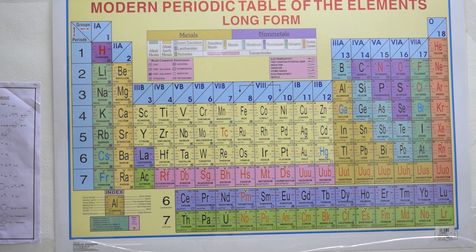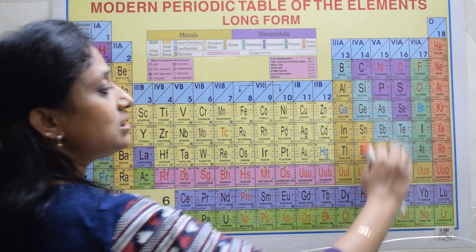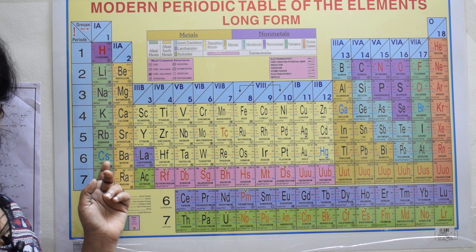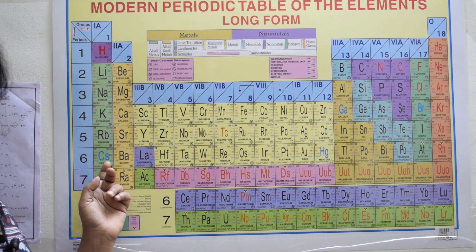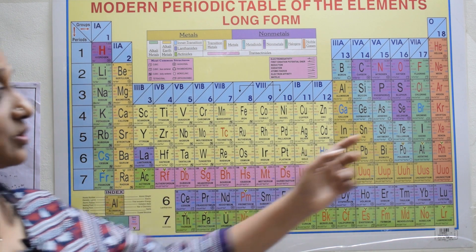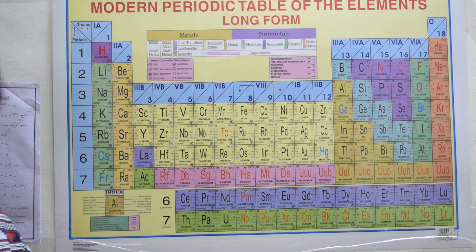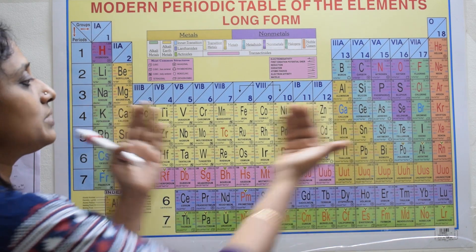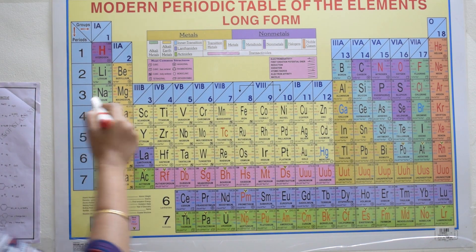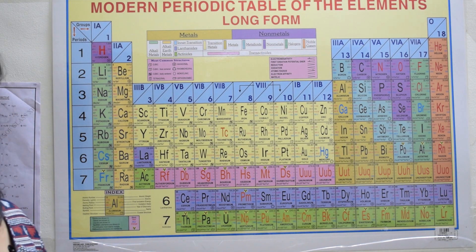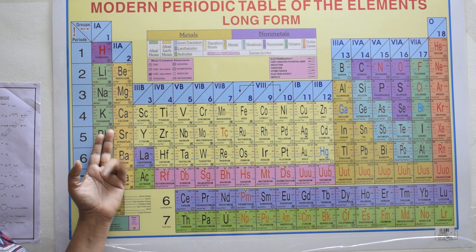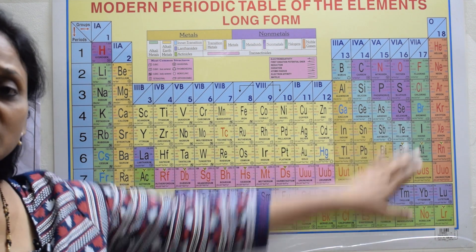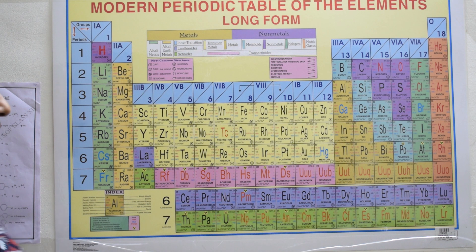On the left extreme of the periodic table, the first two groups are completely metals. On the right extreme, those elements are non-metals. Metals are electropositive in nature — they tend to donate electrons. Non-metals are electronegative in nature — they try to pull or drag electrons from metals. For example, Na and Cl combine together to form NaCl, which is the common salt we use.